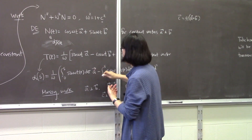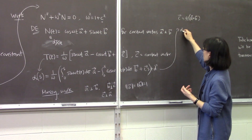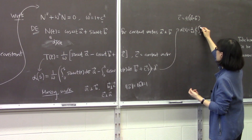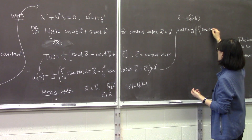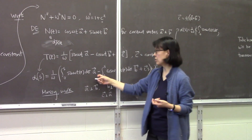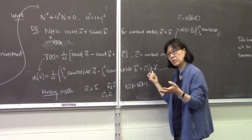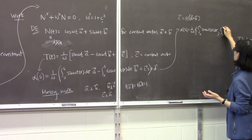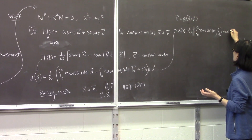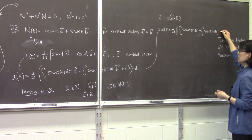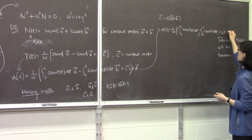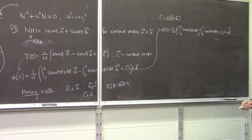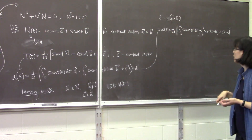Using the fact that A and B are orthogonal, and C equals A cross B with length c, we can simplify. Alpha(s) equals 1/w times: the integral from 0 to s of sin(wt(σ)) dσ in the A direction, minus the integral from 0 to s of cos(wt(σ)) dσ in the B direction, plus cs plus another vector D.